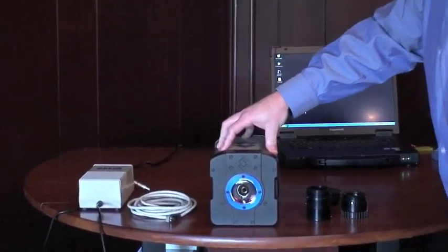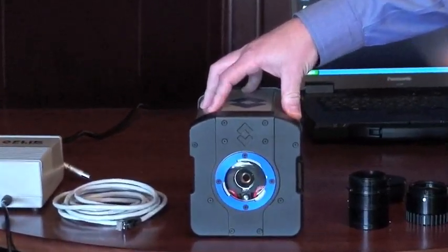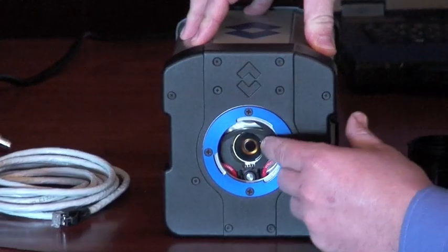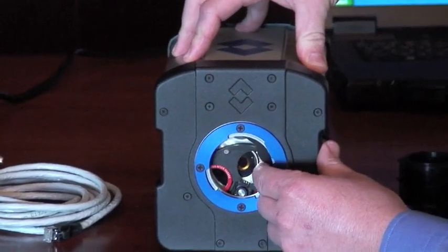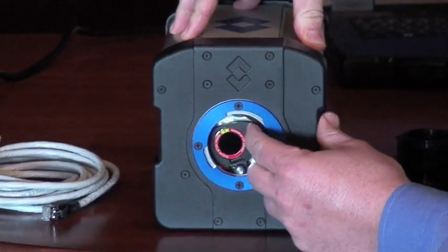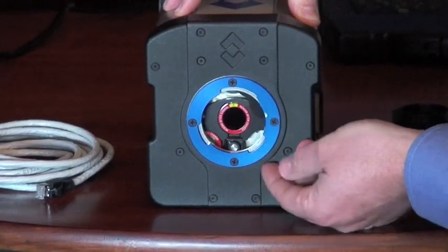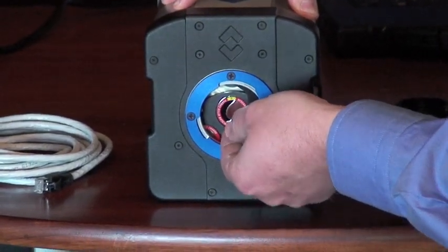The first thing you'll notice is a built-in four-position filter wheel. One of the really unique things about this camera is the filters are field replaceable. Just simply rotate it with your finger until the filter is in position, press up on the release,